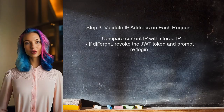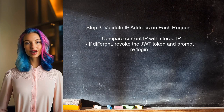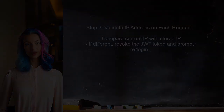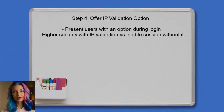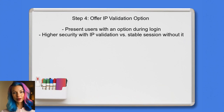On each request after the initial login, the user needs to compare the current IP address with the stored IP address. If they differ, the token should be revoked. Finally, the user should consider providing an option for users to opt in for IP address validation during login. This allows users to choose between higher security and session stability.